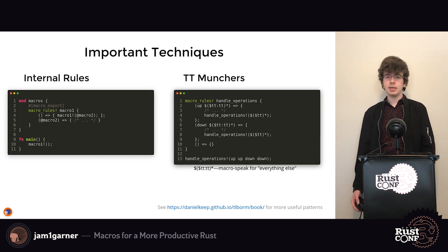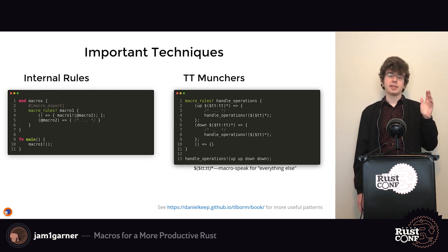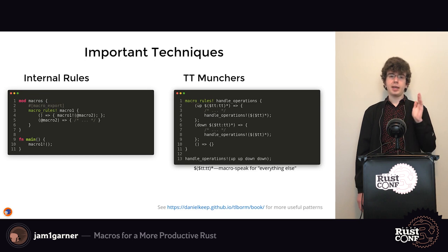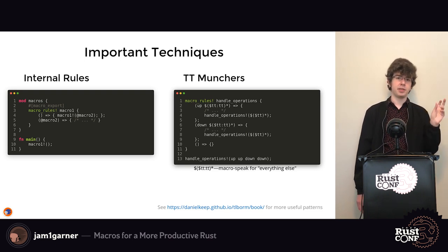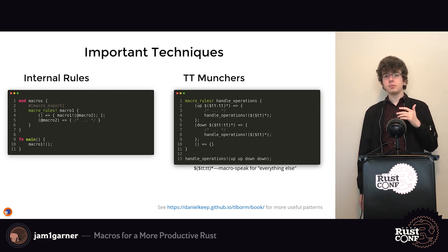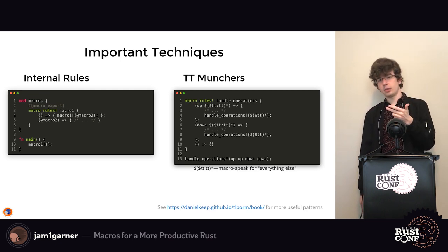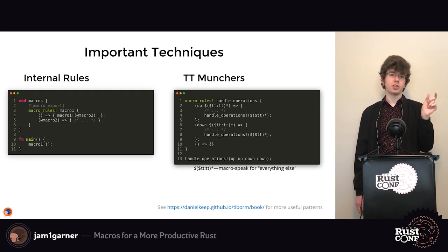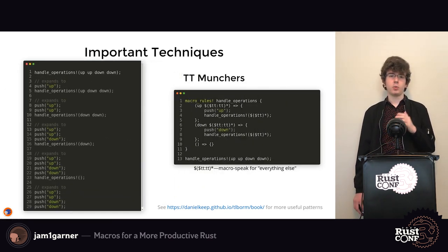Another important technique is the TT muncher. TT stands for token tree — everything in Rust is split into tokens in a tree format, where brackets make their contents children in the tree. If you match against repeated token trees you match against everything passed into the macro. If you match against something and then the rest of the token trees, you can handle parsing one token at a time, passing the rest back into the macro recursively.